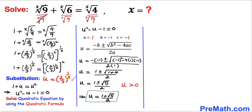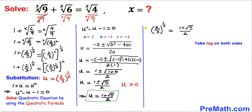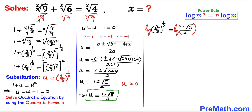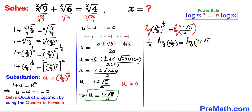Since u equals (2/3)^(1/x), we compare the two equations and write (2/3)^(1/x) equals (1 plus square root of 5) divided by 2. Taking log on both sides and applying the power rule, we bring the exponent to the front: (1/x) times log(2/3) equals log of (1 plus square root of 5) divided by 2.